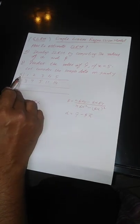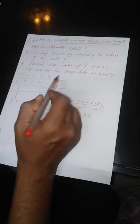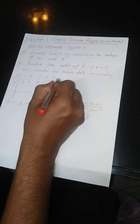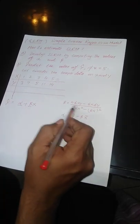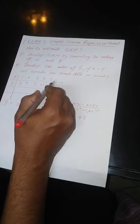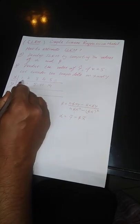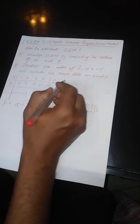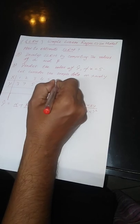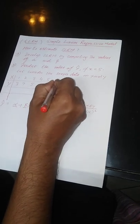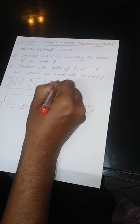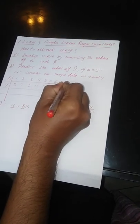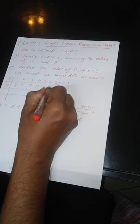Here our x values: if we sum these values, we will get summation x. So 1, 2, 3, 4, 5 — the sum is 15. So summation x is equal to 15.